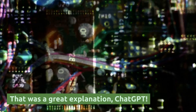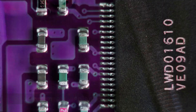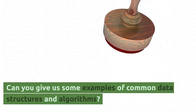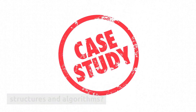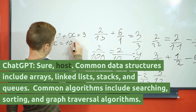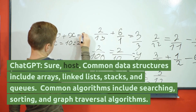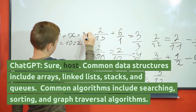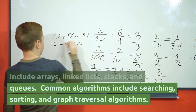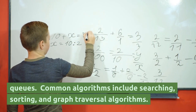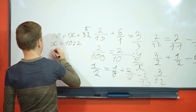That was a great explanation, ChatGPT. Can you give us some examples of common data structures and algorithms? Sure, host. Common data structures include arrays, linked lists, stacks, and queues. Common algorithms include searching, sorting, and graph traversal algorithms.